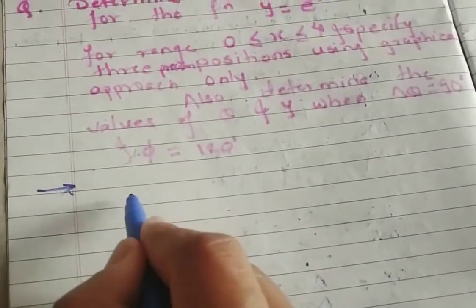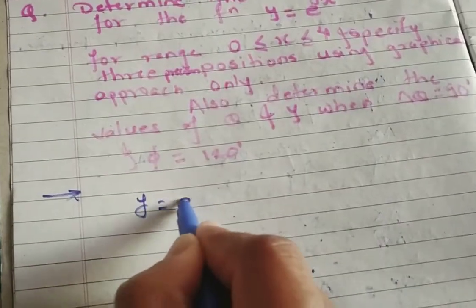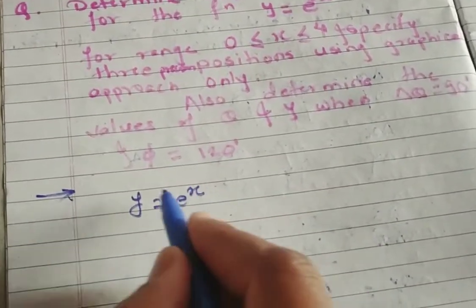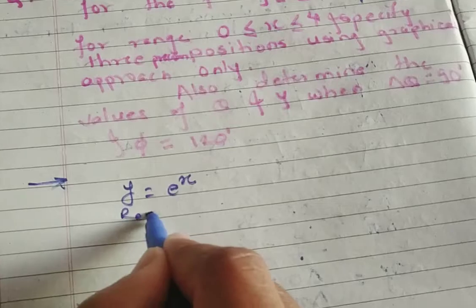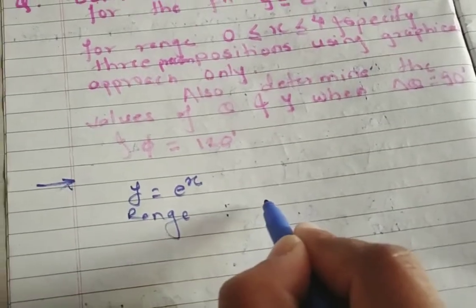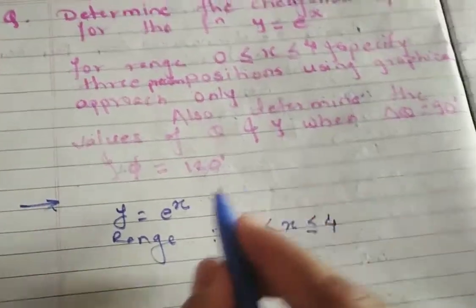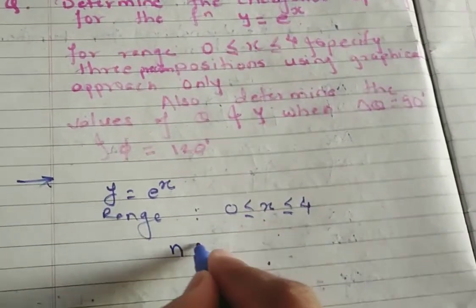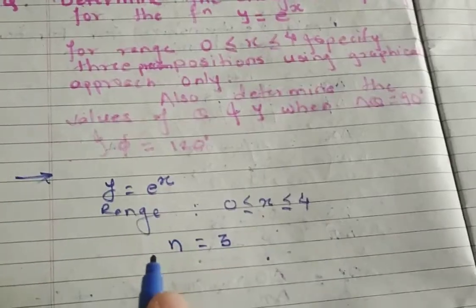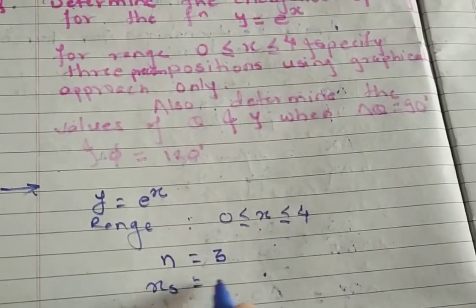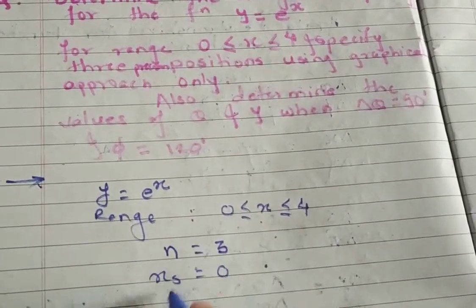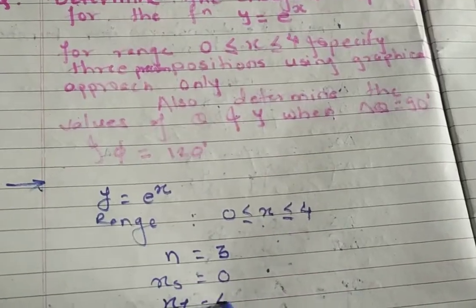Let's write the given data first. Function is y = e^x. The range is 0 ≤ x ≤ 4. The precision positions are 3, so n = 3. xs = 0 and xf = 4.